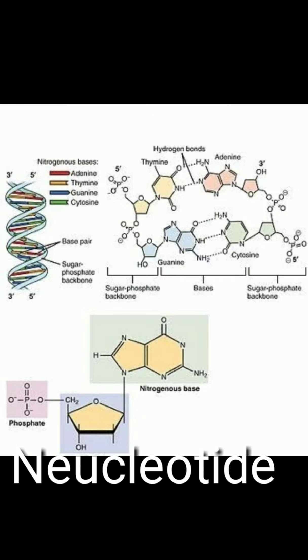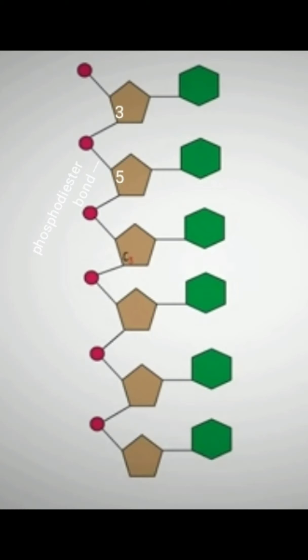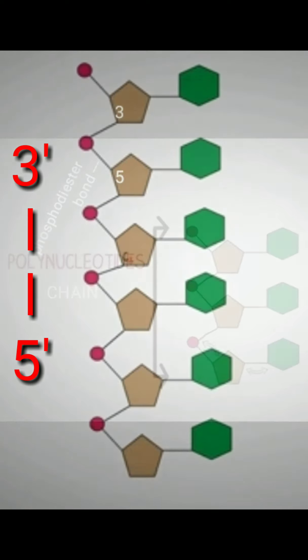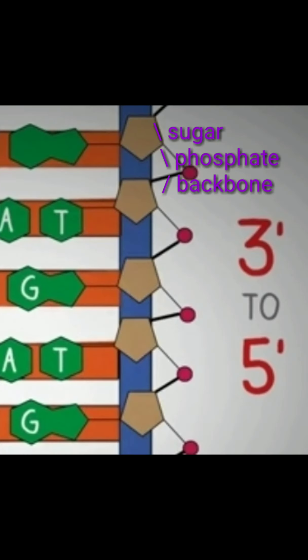One polynucleotide chain is made when a huge number of nucleotide molecules combine together with the help of three-prime to five-prime phosphodiester bonds, linked between the third carbon of the sugar above and the fifth carbon of the next sugar below of another nucleotide. By this repeated pattern, many nucleotides are joined together to form a single long polynucleotide chain.